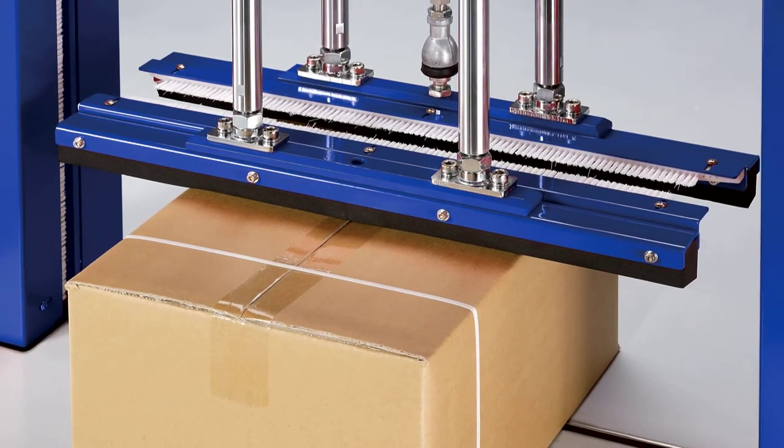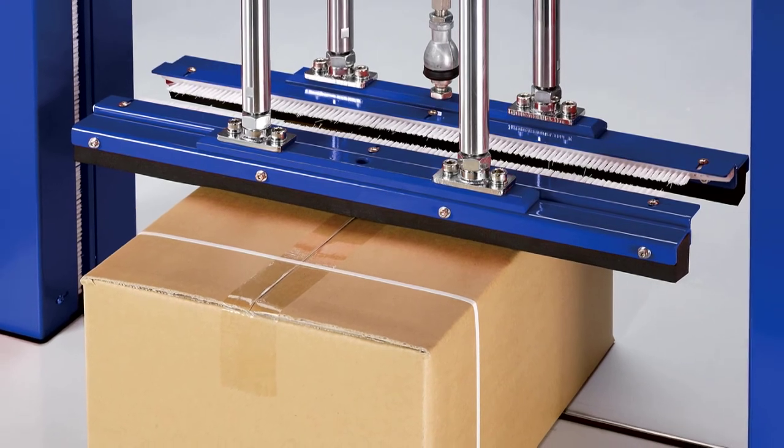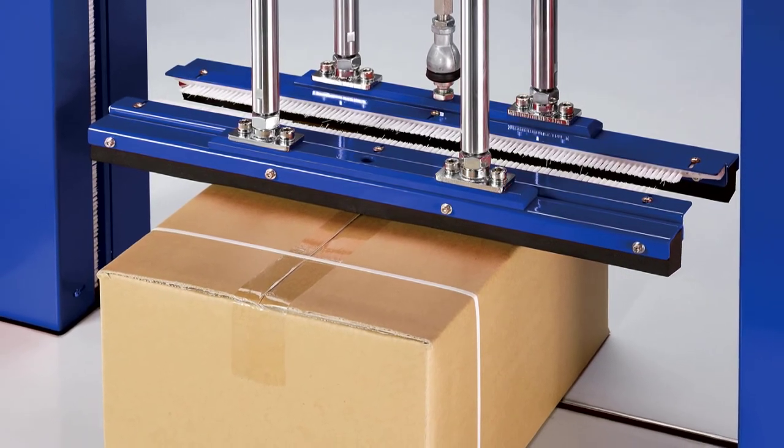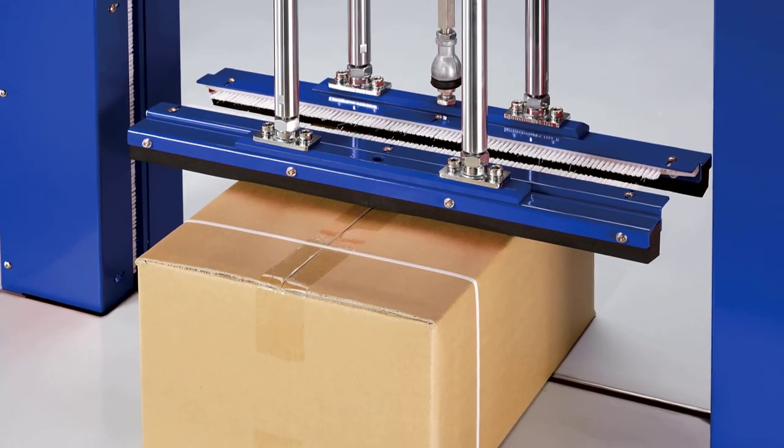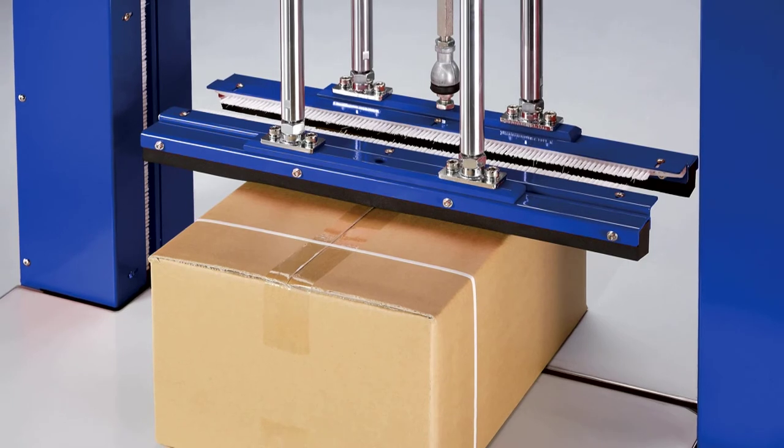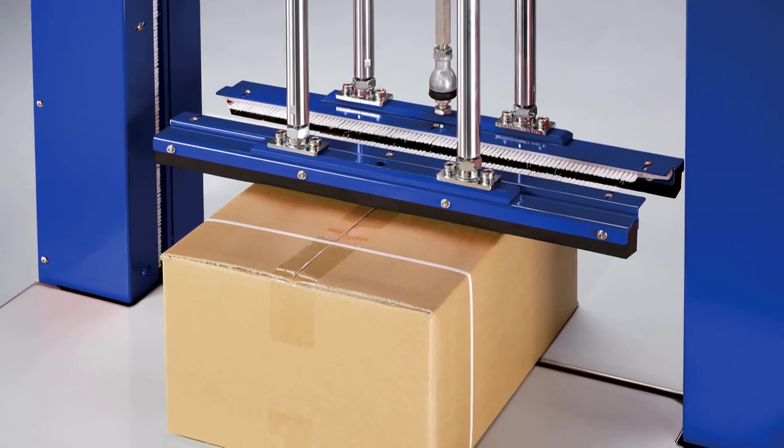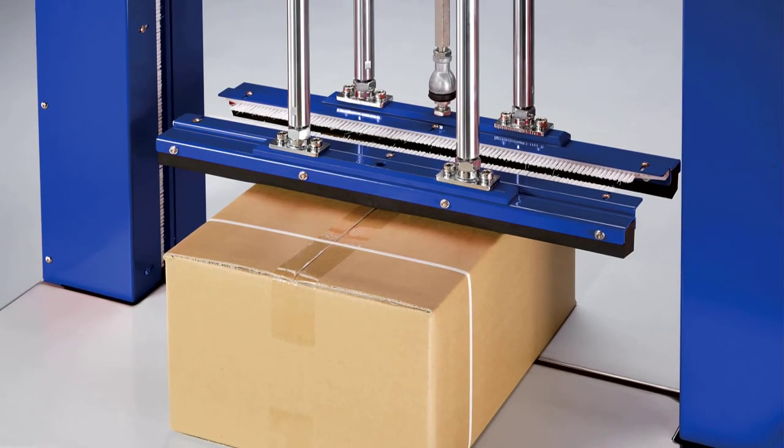The bar expels surplus air from the stack prior to strapping to improve pack stability. This requires an air supply delivering up to 215 liters per minute at a pressure of 6 bar to maintain continuous use at a cycle time of 2.1 seconds.